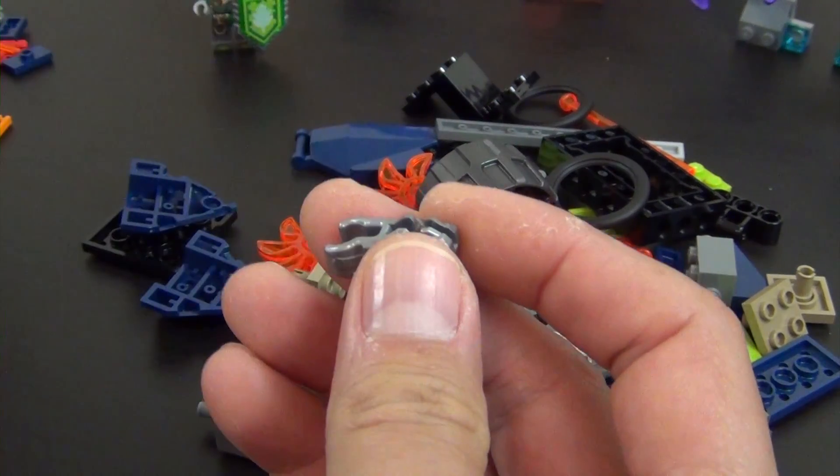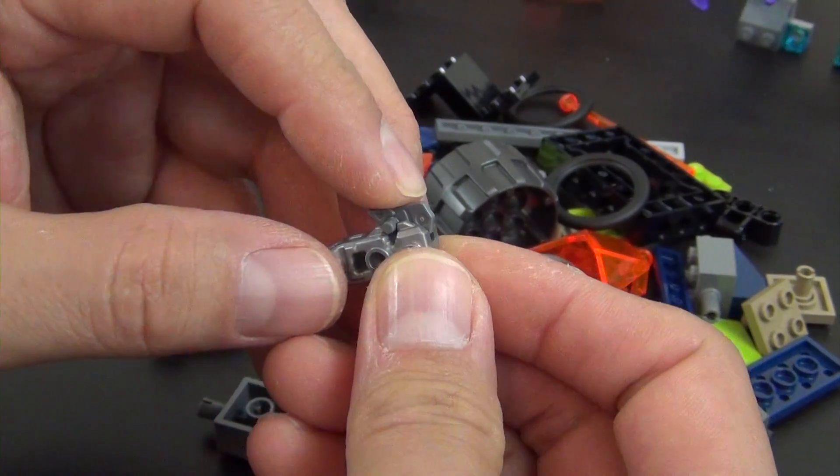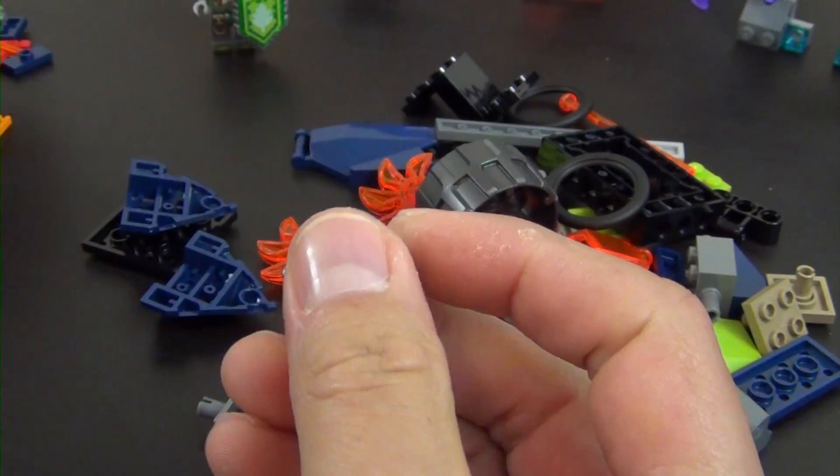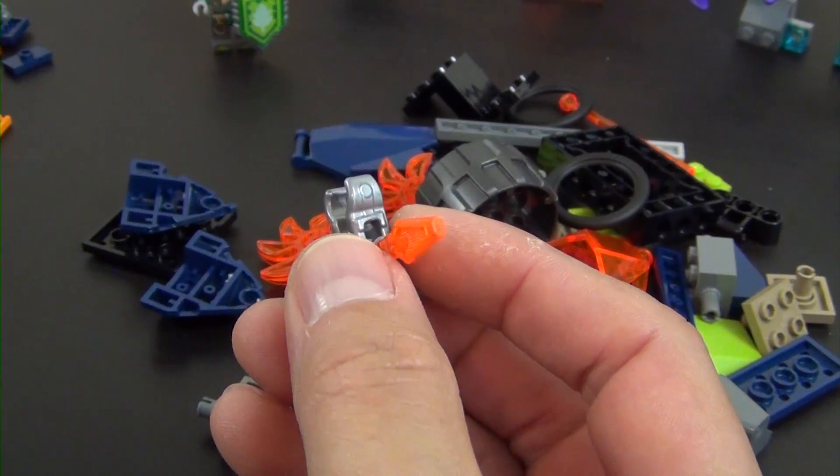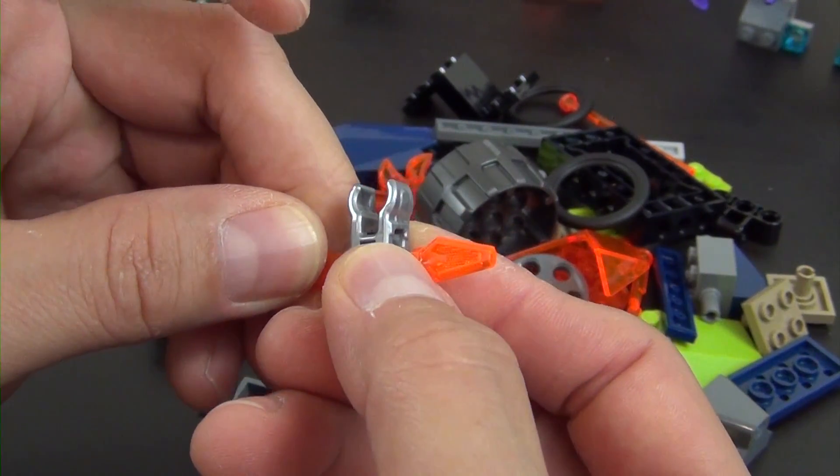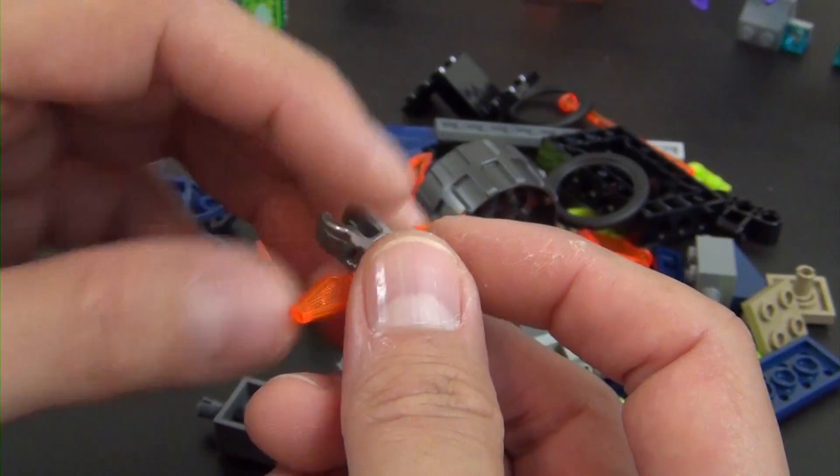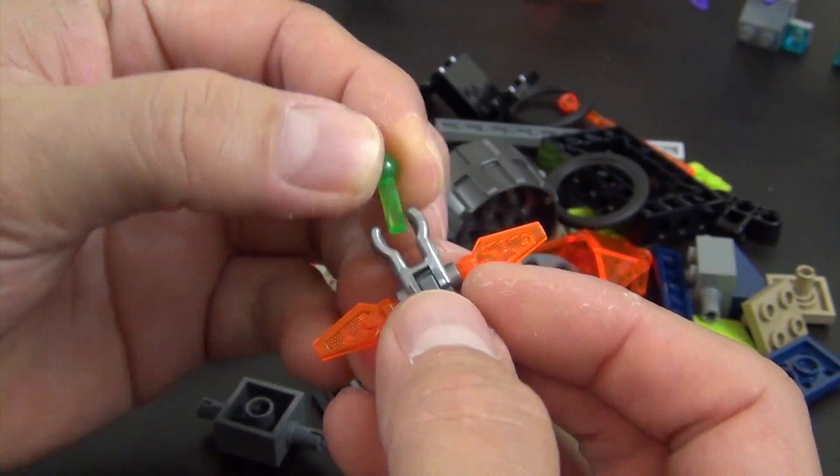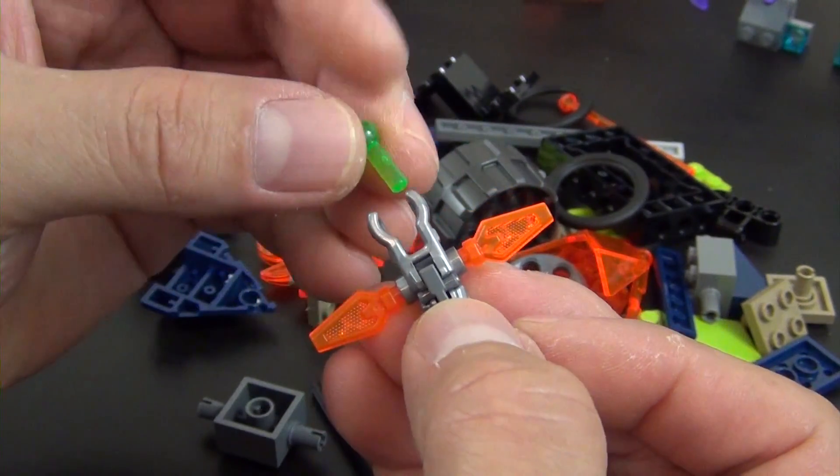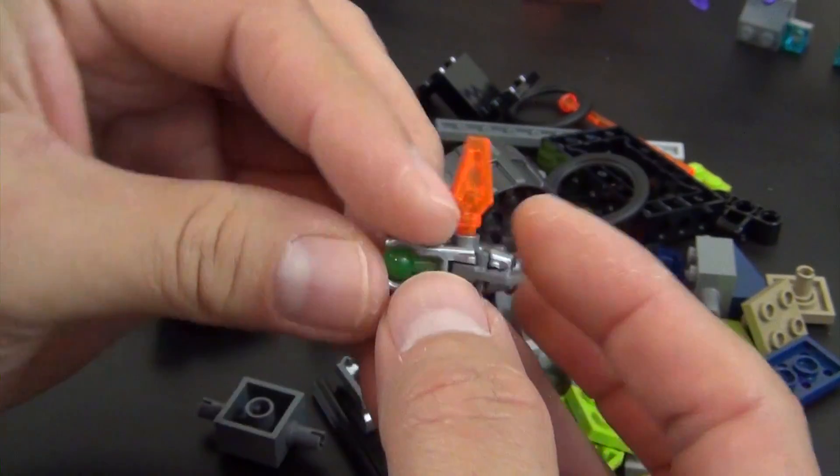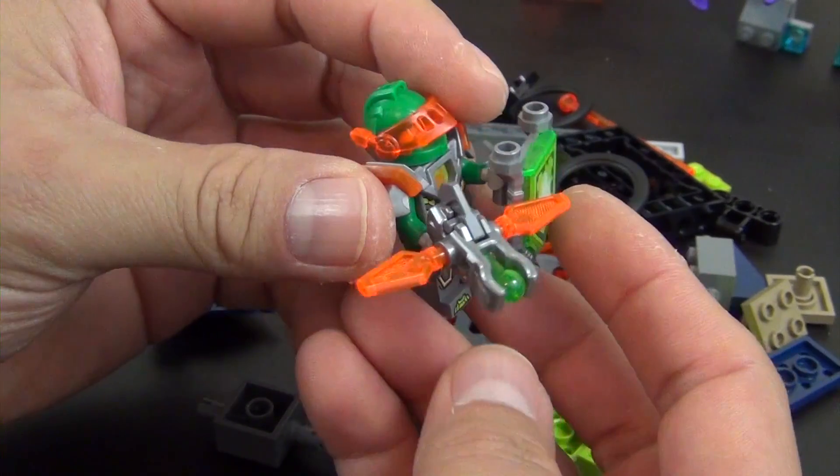He has a weapon that we need to build. So it's this little crossbow looking launcher piece. Put the trigger, put the trigger in. And these little - I don't know what they're called - mini sword pieces, mini blades. We have this little bar with a ball on it. That's what goes in the launcher. So when you push that, that shoots out. That's his crossbow.